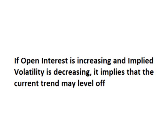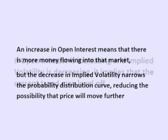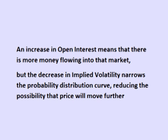If open interest is increasing and implied volatility is decreasing, it implies that the current trend may level off. An increase in open interest means there is still an increase in contracts for that stock or ETF, which means more money flowing into the market. However, the decrease in implied volatility means that the market is stating that the chance of price moving further is decreasing.